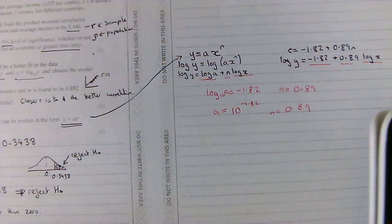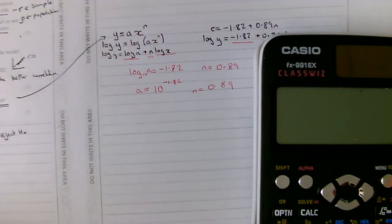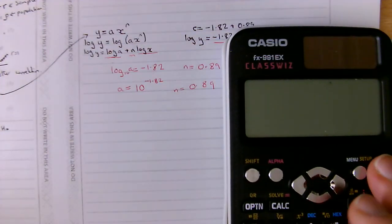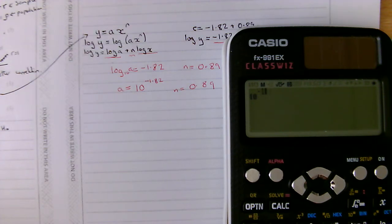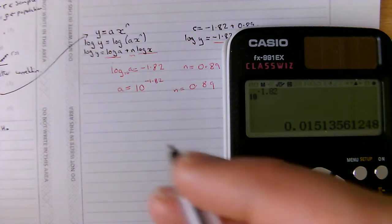Let's just work out then using our calculators what A is. So, I'm going to be 10 to the power of negative 1.82. Gives me an answer of 0.0151.